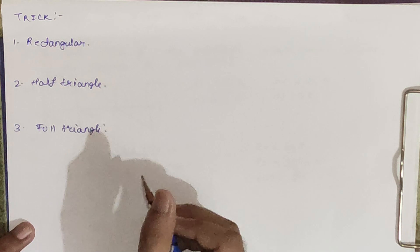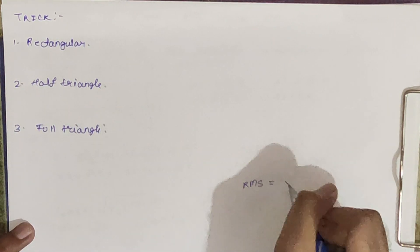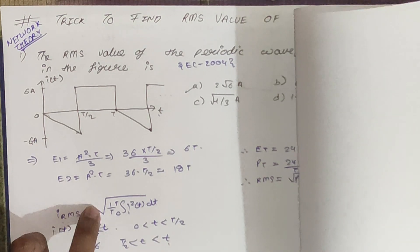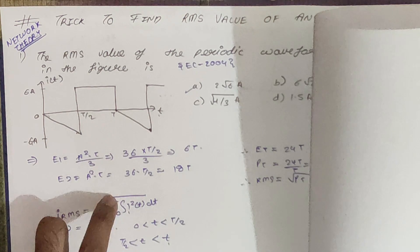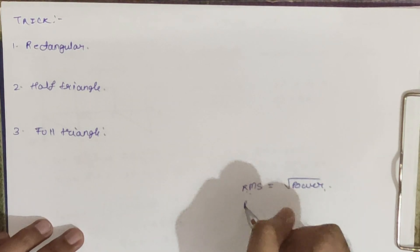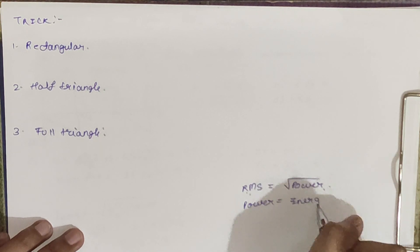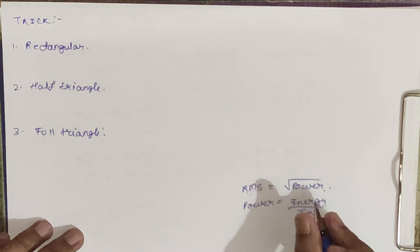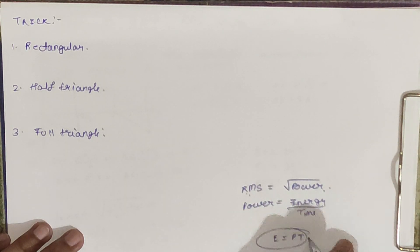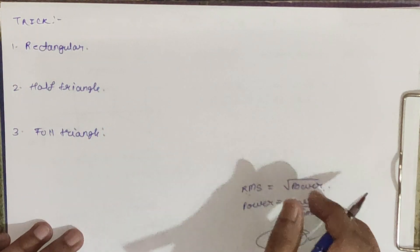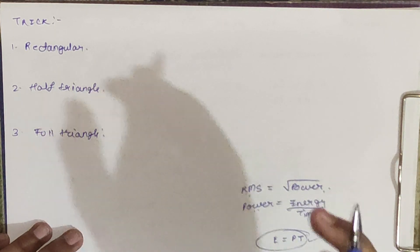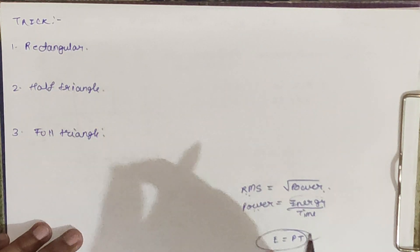The trick uses the relation between RMS and power: RMS is nothing but the square root of power. You can see i_rms equals √(1/T ∫₀ᵀ i²(t) dt), and power is simply (1/T) ∫₀ᵀ i²(t) dt. So RMS = √Power, and Power = Energy/Time. If you tend to forget this, remember that Energy = P×t (like Exercise = P×t), so you will never forget the relation. To find RMS, we find power, and to find power, we find energy.